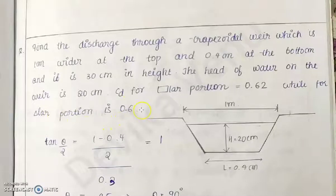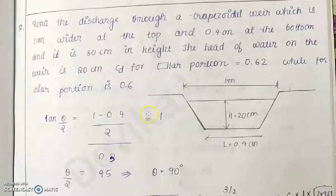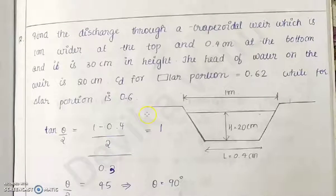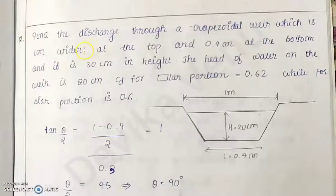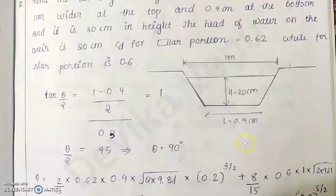CD for the rectangular portion is 0.62 while for the triangular portion it is 0.6. So CD for both portions are given. It is a very direct question — it will be the combination of a triangular and a rectangular weir discharge.